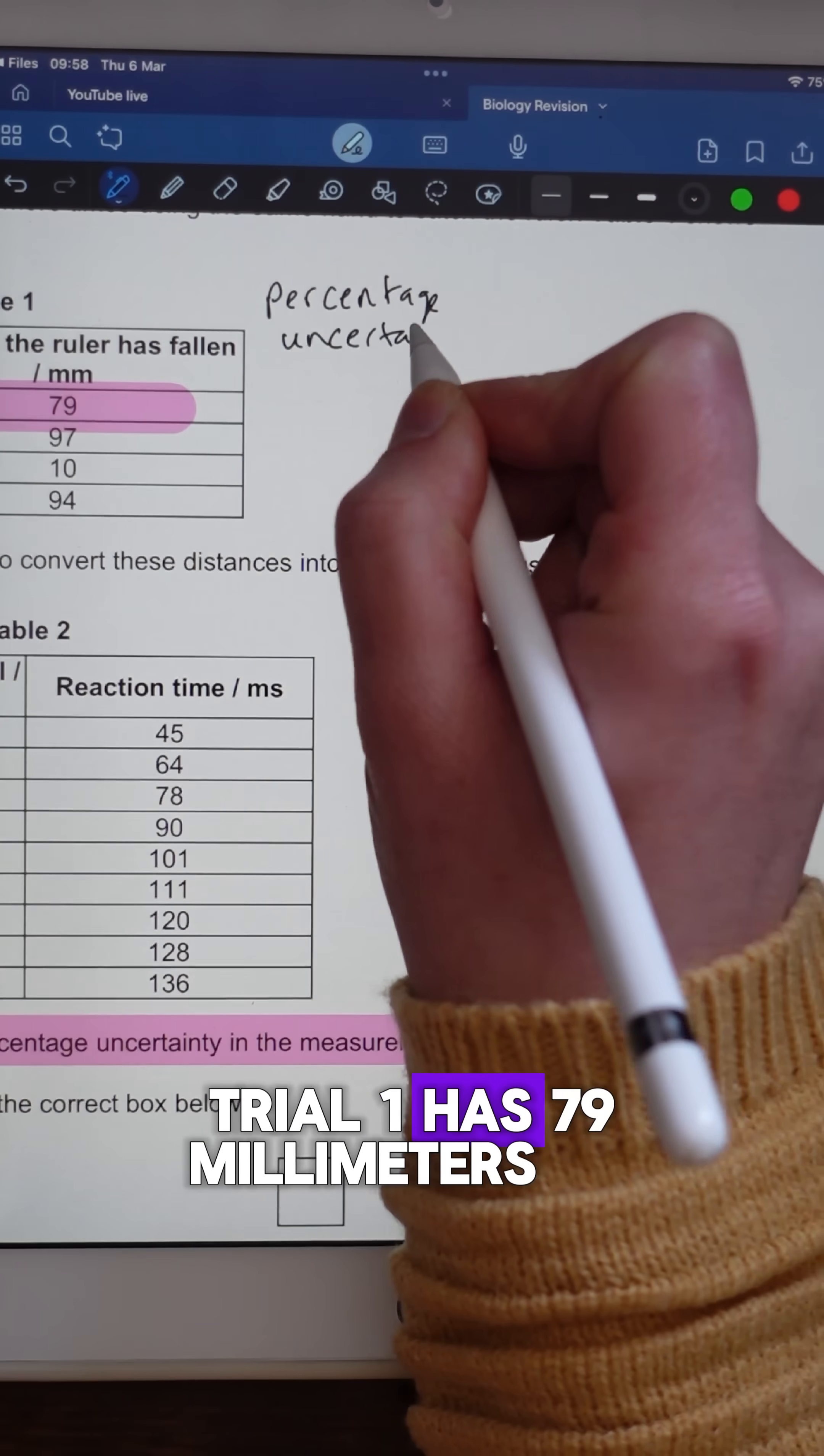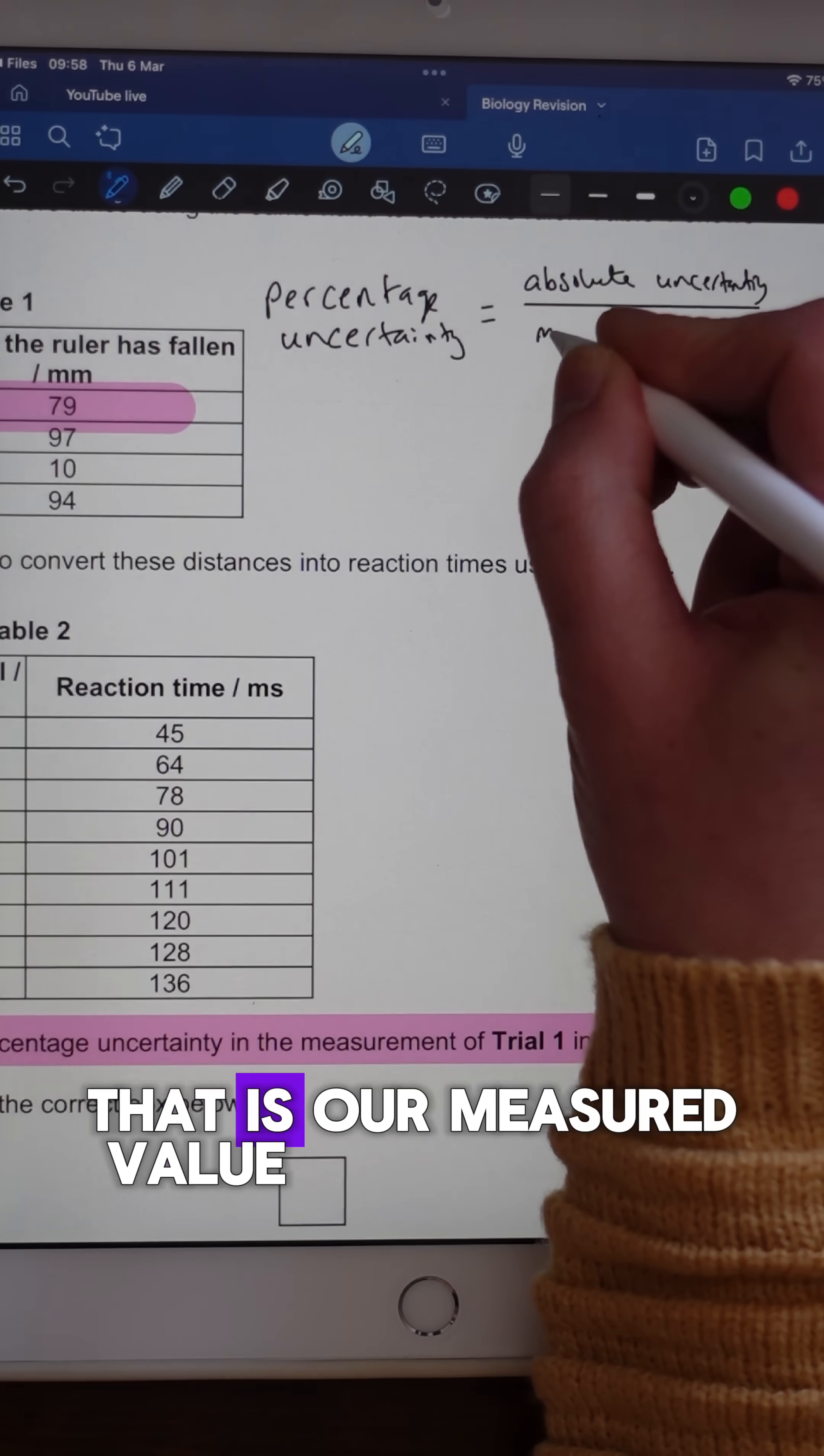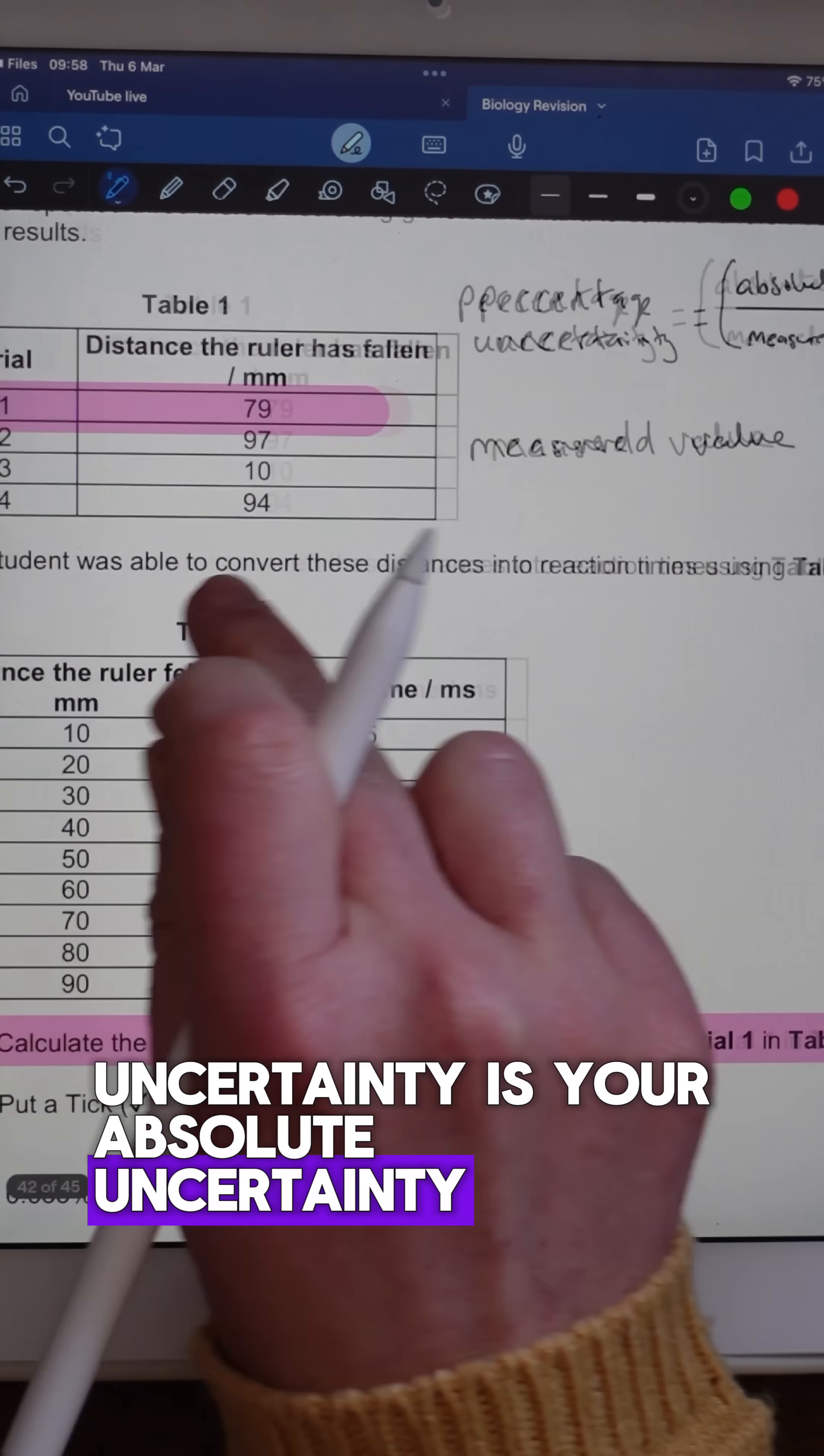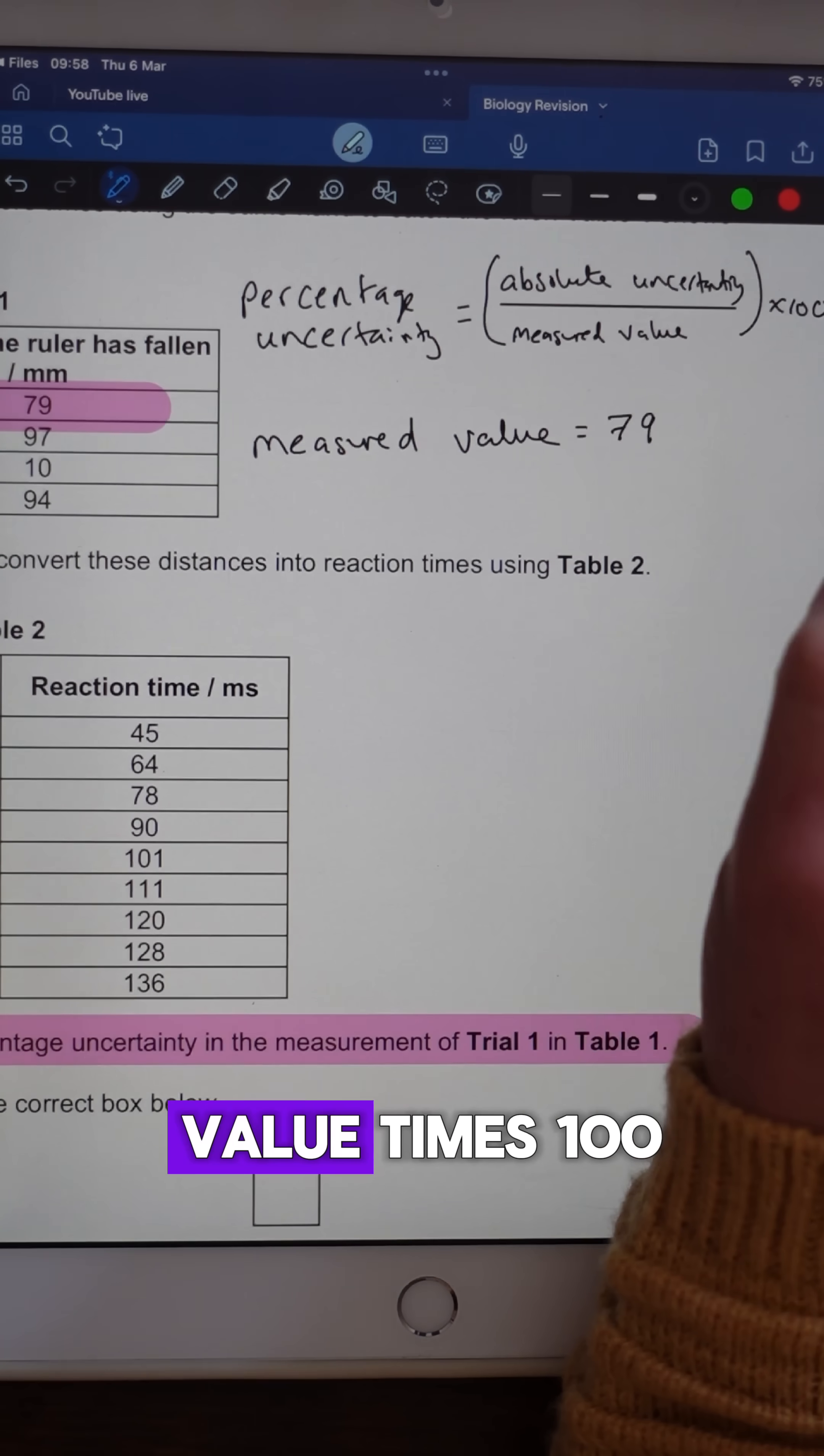So first of all, trial one has 79 millimeters. That is our measured value. And the formula for working out percentage uncertainty is your absolute uncertainty divided by the measured value times 100.